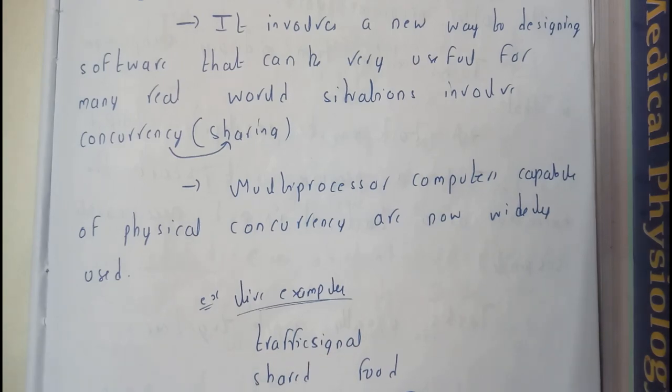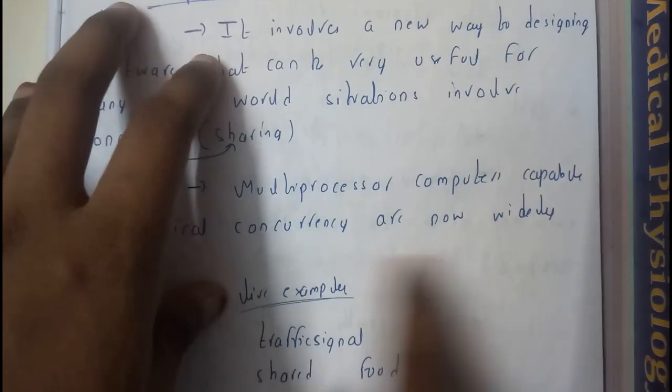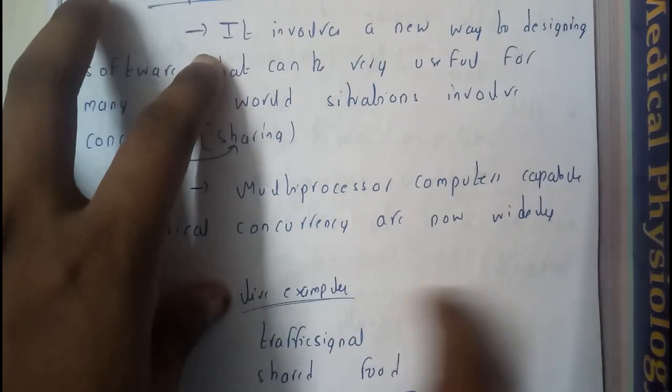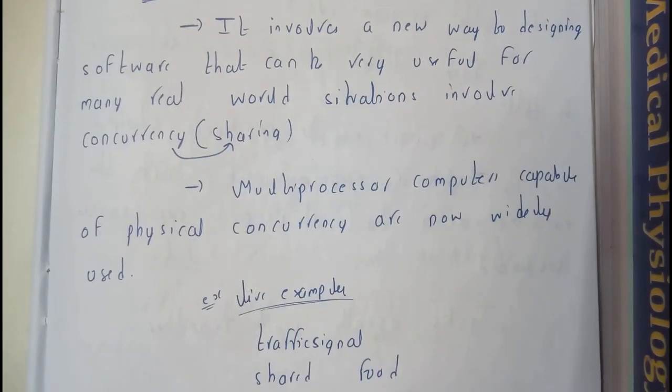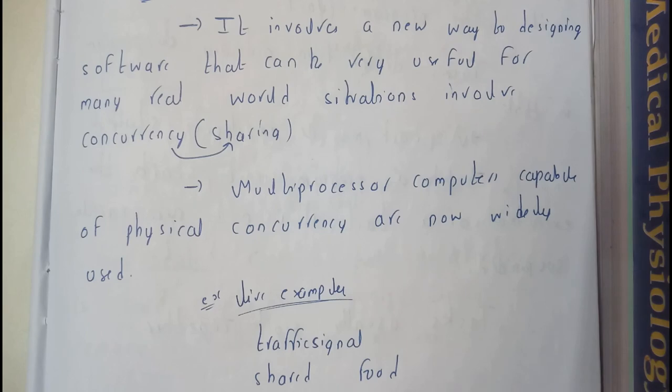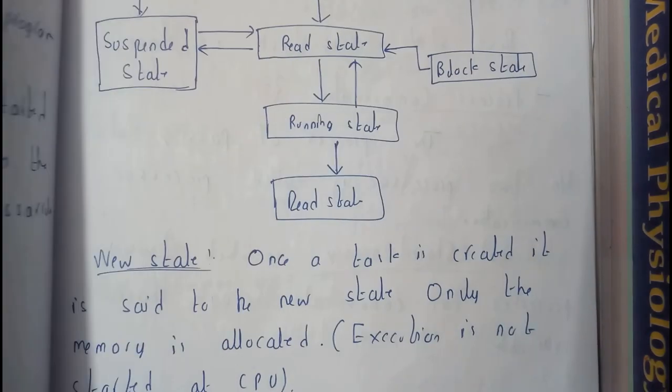Traffic signals: if there is a pole in a junction with a four-road junction, then the four roads are using that single traffic signal and the four roads are working concurrently. That is how concurrency works.